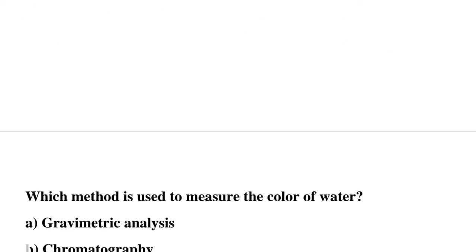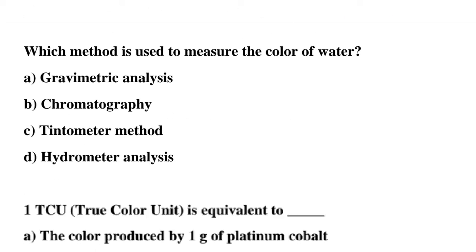Next question: which method is used to measure the color of water? Option A: gravimetric analysis, option B: chromatography, option C: tintometer, option D: hydrometer analysis. The correct answer is option C: tintometer method.